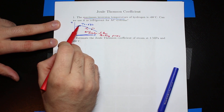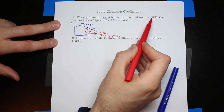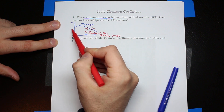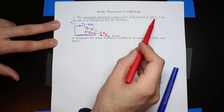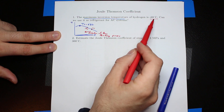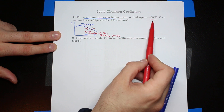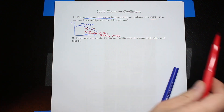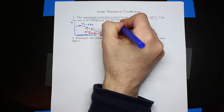We can only get a decrease in temperature when we are on the left side of the inversion curve. But there is a problem — this maximum inversion temperature for hydrogen is so low that to achieve a cooling effect, the system would need to operate at extremely cold conditions, far below the range of AC applications. So the answer is no — hydrogen cannot be used.